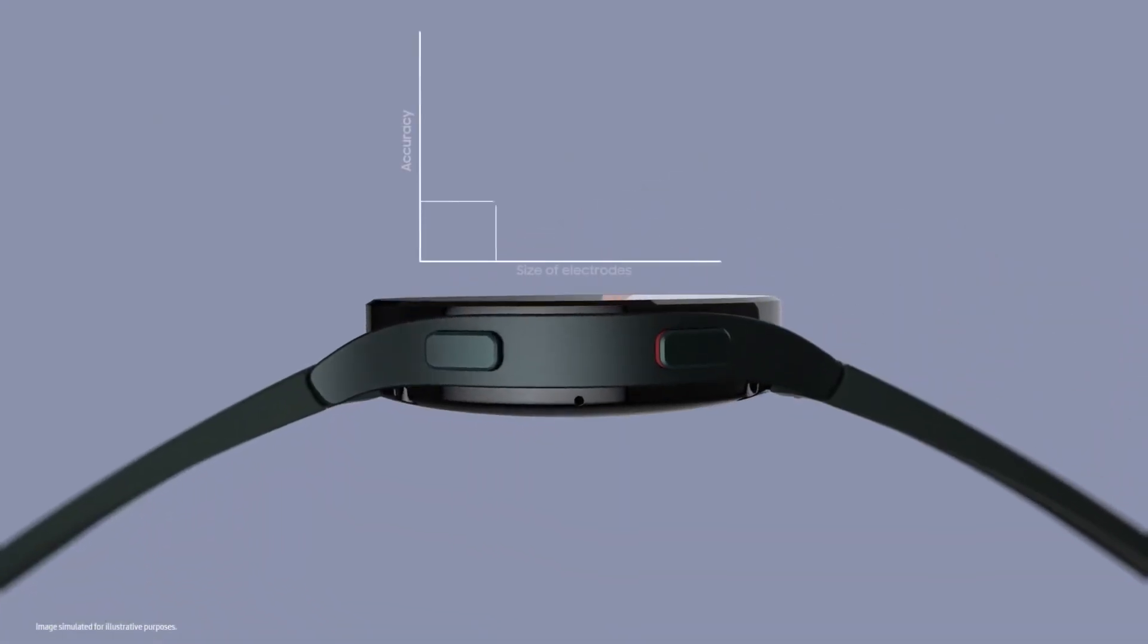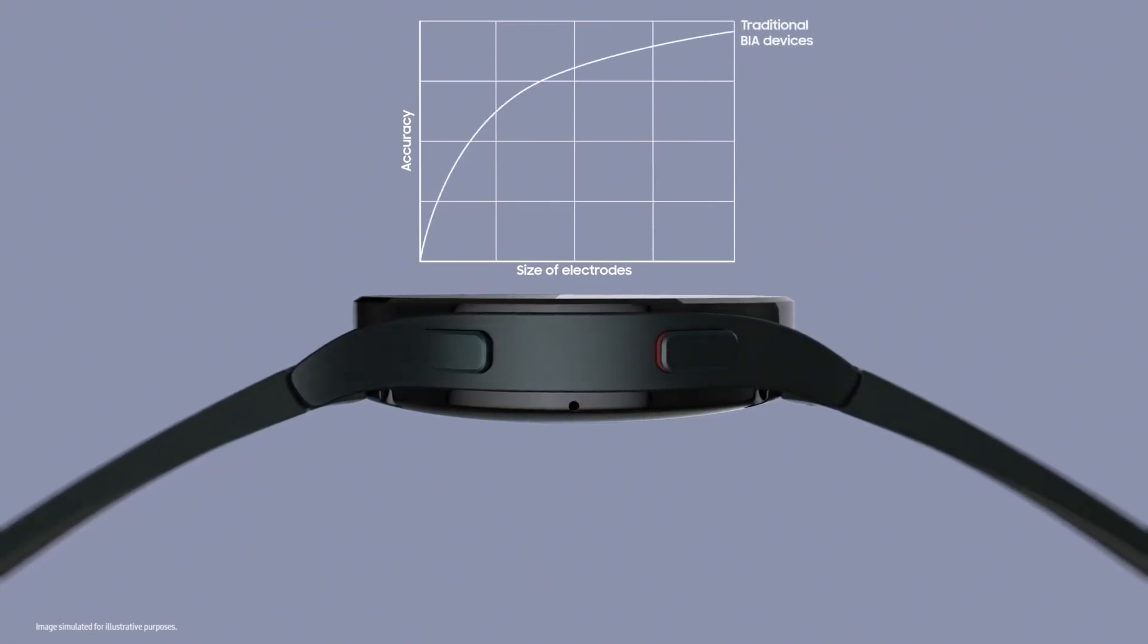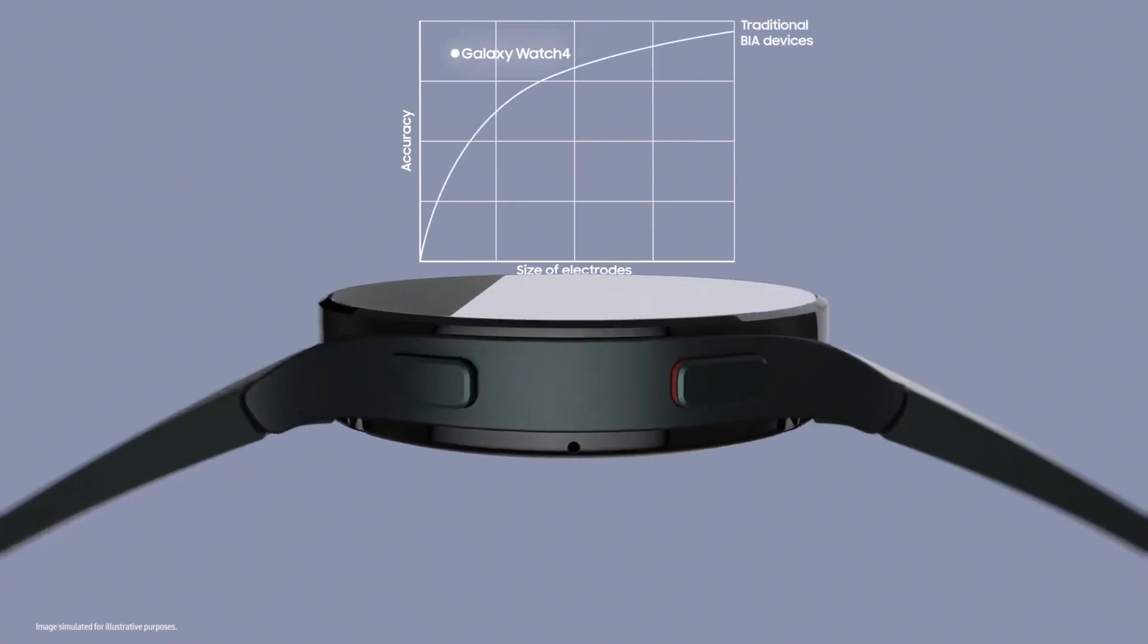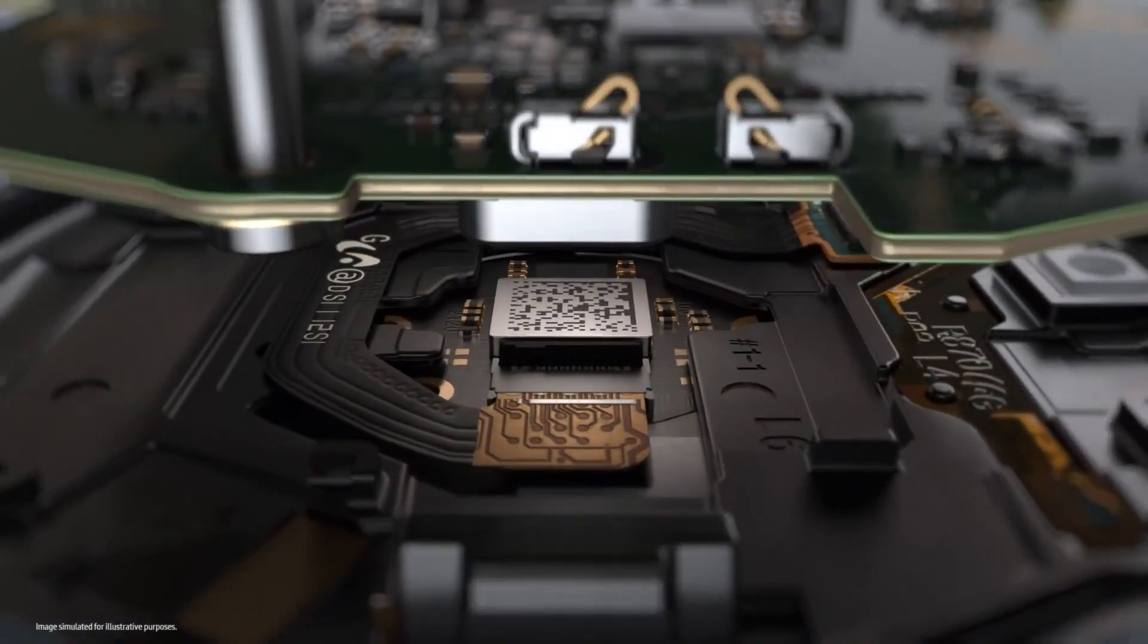Normally, the larger the electrode, the easier to get an accurate reading. But to give you accurate readings even with small electrodes on the watch, we experimented relentlessly and devised the best hardware and solution.